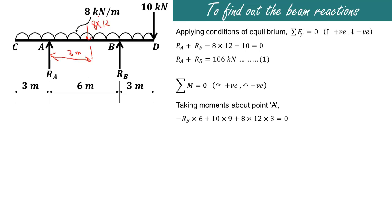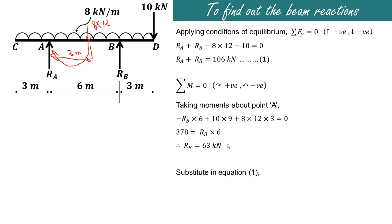The UDL of 8 kilonewtons per meter over the total length of 12 meters acts at the center of 12 meters, which is 3 meters from point A. So 8 into 12 into 3 produces a clockwise moment, which is positive. Transferring the Rb term gives 378 equals Rb into 6, so Rb equals 378 divided by 6, which is 63 kilonewtons. Substituting into equation 1: Ra equals 106 minus 63, therefore Ra equals 43 kilonewtons.